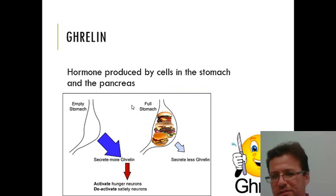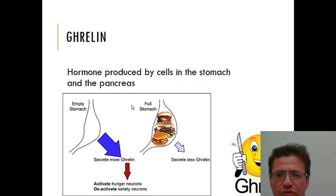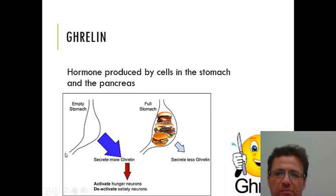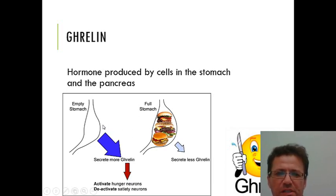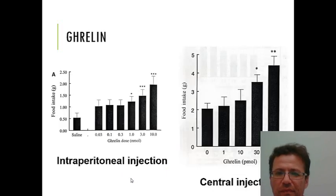What about the hormone ghrelin? Leptin is an example of long-term control, but we also have short-term control — because we regulate how much we eat on a daily or even hourly basis. One of the hormones responsible for that is produced by the stomach and pancreas and is called ghrelin. Empty stomachs secrete a lot of ghrelin, whereas full stomachs secrete less. Ghrelin seems to work in the opposite direction of leptin — it promotes hunger and stops you feeling full.